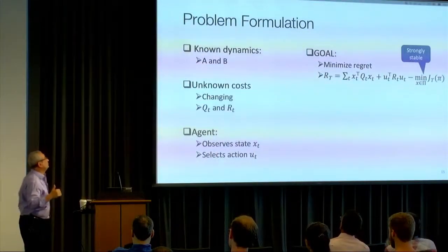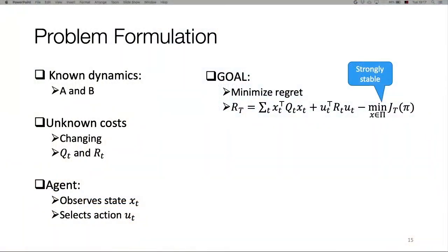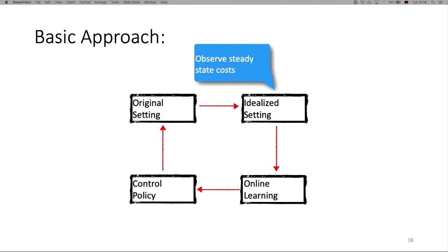To set up the problem more specifically: right now, assume a non-dynamic setting where you know the matrices — you know the dynamics of the system, but there's a change in cost. This reminds me of the online MDP setting. The agent observes the states and selects an action. The goal is to minimize the regret: the cost the agent observes compared to the best single policy, where a policy is defined by a matrix.